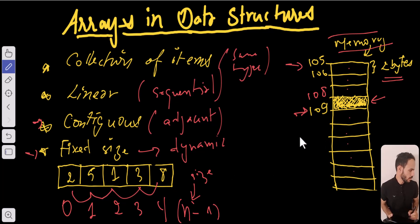So we will put each element in memory: we have 2, 5, then 1, then 3, then 8.